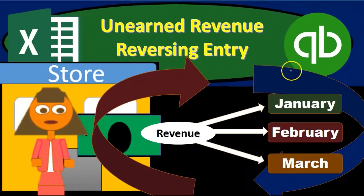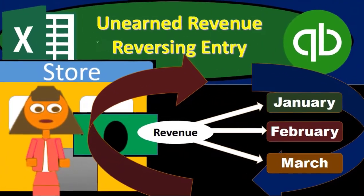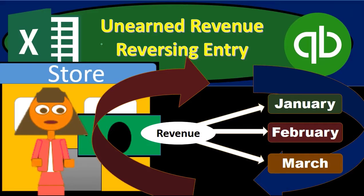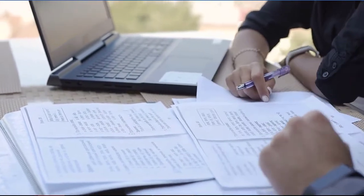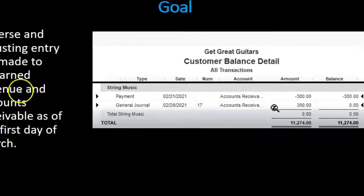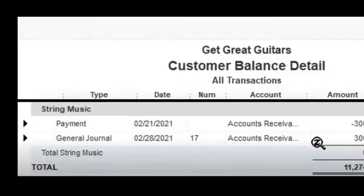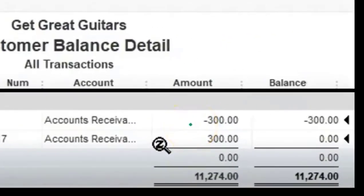We will be doing a reversing entry related to the unearned revenue, so we do have to take into consideration what the adjusting entry was that was originally made, which we will be reversing. First we're going to take a quick look at QuickBooks and then move to enter this information into Excel. If we look at the QuickBooks customer balance, we see that we have reversed this negative receivable — this is what the adjusting entry was, which we are now reversing.